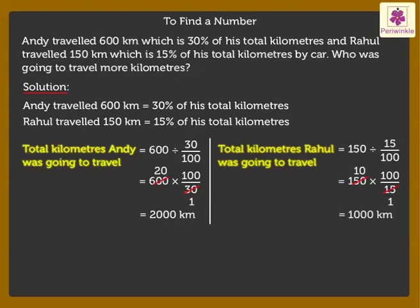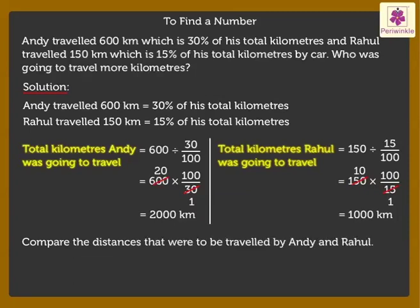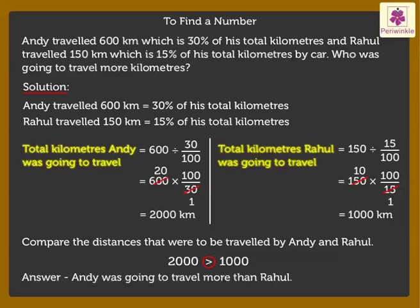Now, compare the distances that were to be travelled by Andy and Rahul. 2000 is greater than 1000. Thus, Andy was going to travel more than Rahul.